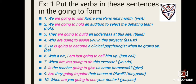Number one: 'We ___ Rome and Paris next month.' The verb is 'visit.' Since we use 'we,' which is plural, we use 'are' — so it's 'We are going to visit Rome and Paris next month.' Number two: 'We ___ an audition to select the debating team.' Again using 'we,' so: 'We are going to hold an audition to select the debating team.'